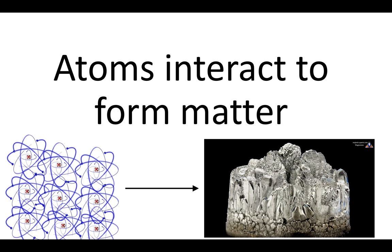Atoms interact together to form matter. The magnesium we used in class is made up of a bunch of magnesium atoms locked together in a rigid way, forming solid magnesium matter. If we were to melt it, the atoms would loosen up and not be so rigid, forming a liquid. Think about the urea and water activity — we took solid urea, dissolved it in water, so it became dissolved in liquid.